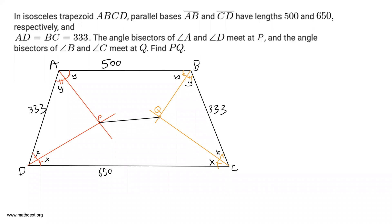The first thing I'm going to claim is that P and Q are at the same height from the base. It might not look like that on the diagram, but that's just because the diagram is not perfect. I'm going to claim that the distance from P to CD and from Q to CD is equal — so this side length equals that length.